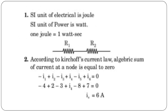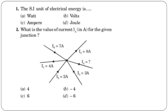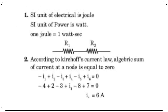The SI unit of electrical energy is Joule — it is Joule. The power unit is Watt. One joule is equivalent to one watt second. 1 joule = 1 watt second.